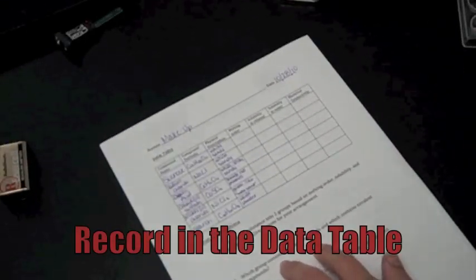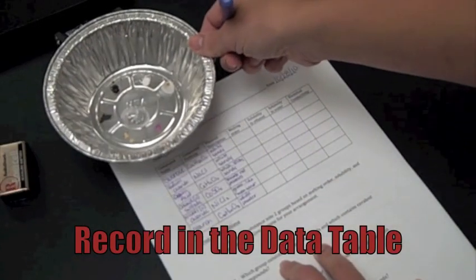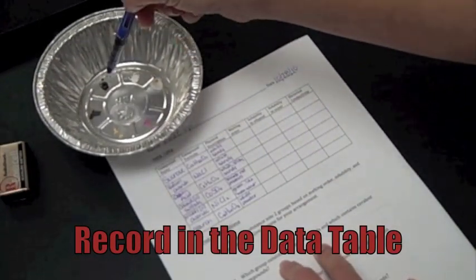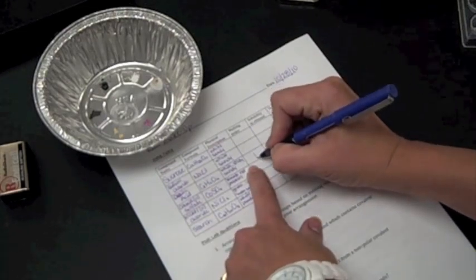So then recording our melting order, looking at my little pie plate pan here. Let's see, I'll put it right there so y'all can see it. Remember, this was one, two, three. Three melted first, so the oxalic acid melted first.